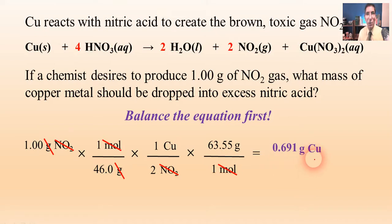So if you're in the laboratory in the fume hood, of course in a safe environment, and you drop in 0.691 grams of copper into a bunch of excess nitric acid, you would expect to get 1.00 grams of nitrogen dioxide gas released.